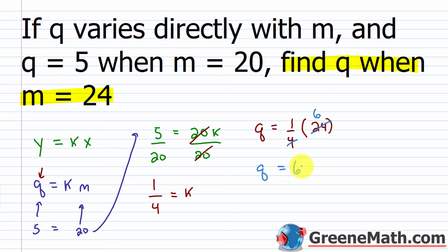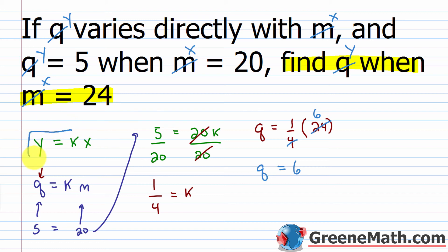When they change the letters around — which you might see on the SAT or ACT — just replace the variables with what you know using x and y. Solve it, then translate back. For instance, y equals 5 when x equals 20, find y when x equals 24. They're testing whether you can adapt and apply your knowledge beyond just regurgitating what you learned in a textbook.